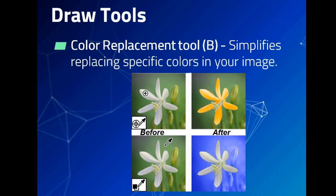The Color Replacement tool is used to replace specific colors in your image. For example, in the given image the flower is white in color; after applying this tool, the color has been changed to orange. Likewise, the background color is green before applying this tool; after applying it, the color changes from green to blue.